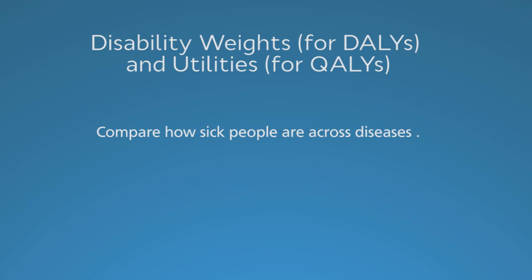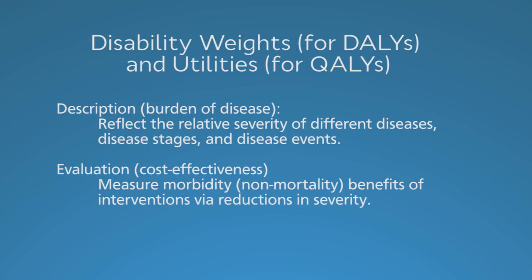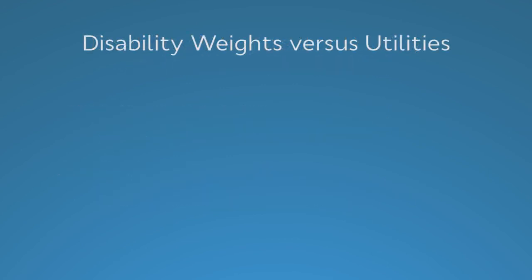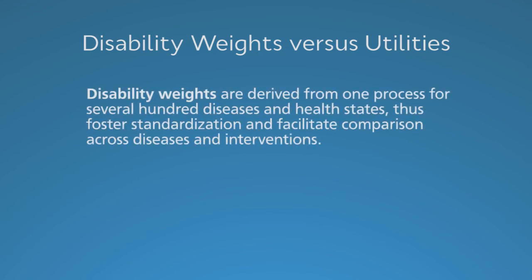Having a limp and walking a little slower doesn't result in a big disability. Having chronic severe pain has a big disability. With disability weights or utilities, you can compare different diseases and problems. Both measures are also useful to compare how well an intervention works in terms of improving health. So if someone has severe pain and one intervention reduces half of that pain and another intervention gets rid of the limp completely, it may turn out that reducing the pain by half is more valuable than getting rid of the limp entirely, because the limp didn't have such a bad effect on overall health. However, there are some key differences between disability weights and utilities. Disability weights have the advantage of being derived from one process organized by the Institute for Health Metrics and Evaluation.